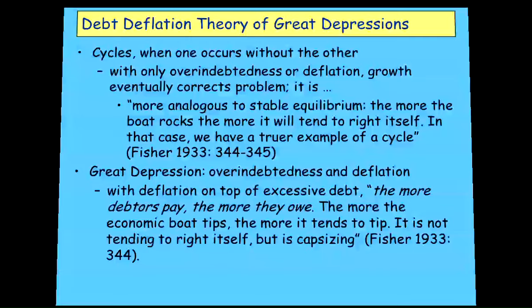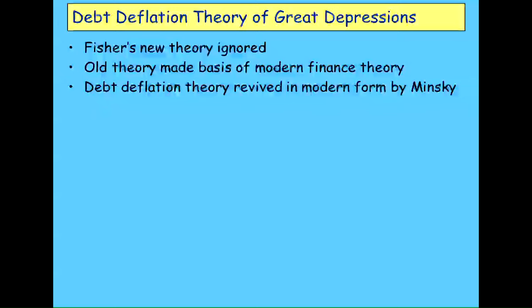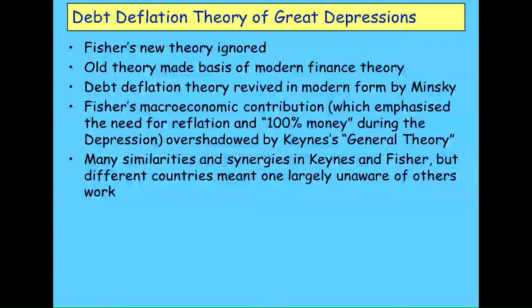Fisher's new theory was ignored — it didn't fit the neoclassical mindset, which can't accept disequilibrium. They made the old theory the basis of modern finance. Fisher himself was also ignored because Keynes completely overshadowed him, which is a pity. It would have been better if there had been some synergy between Fisher and Keynes, because in explaining the Great Depression Fisher may have done a better job of it than Keynes did. But they were largely unaware of each other's work, writing in different continents without the internet or regular intercontinental flights.